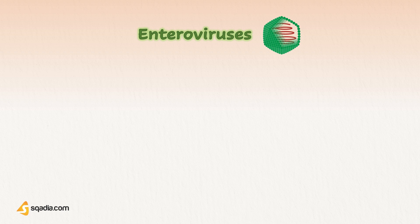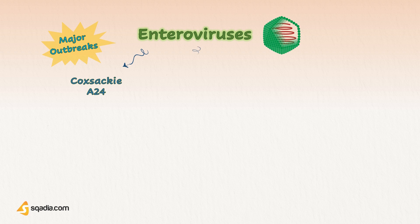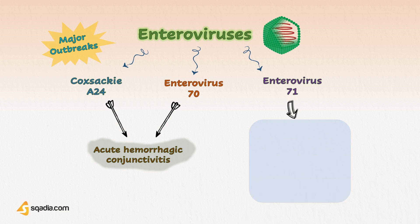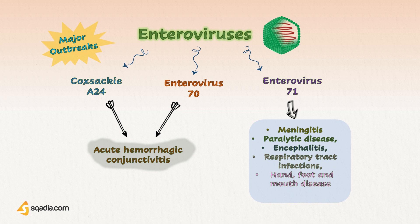Enteroviruses are highly associated with disease in human beings and have resulted in major outbreaks. Coxsackievirus A24 and Enterovirus 70 caused two massive epidemics of acute hemorrhagic conjunctivitis over the past two decades. Another enterovirus, EV71, has all typical features of enteroviruses but also carries an extended pathological spectrum with potential for large-scale epidemics — it can cause meningitis, paralytic disease, encephalitis, respiratory tract infection, and hand, foot, and mouth disease. The biggest outbreak occurred in Taiwan in 1998, in which around 300,000 children were affected and 55 died.